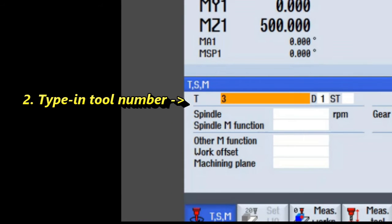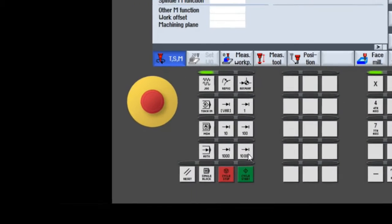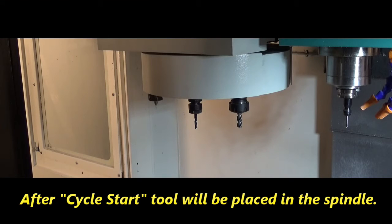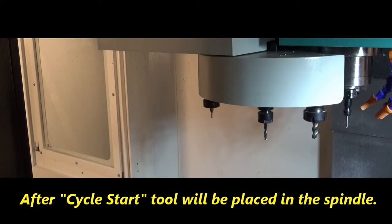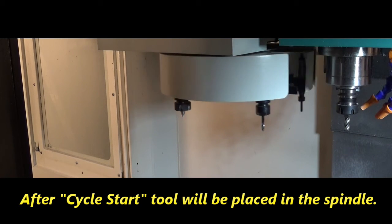So tool 3, cycle start. Drops off tool 3 in tool 3's pocket and picks up tool 2.